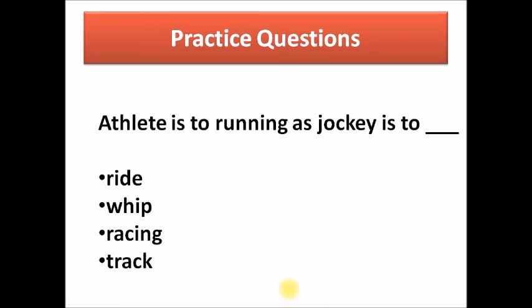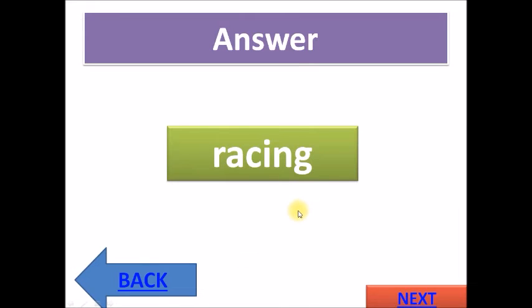Let's look at some more practice questions. Athlete is to running as jockey is to. Let's look at the two words here. Athlete and running. What is the relationship? An athlete usually runs and they use the word running. Athlete is to running, it's in the present continuous tense. As jockey is to. An athlete runs and we use running, the present continuous. So therefore, a jockey, what would a jockey usually do? Athlete is to running as jockey is to. Is it ride, whip, racing, or track? If you said racing, your answer is correct.